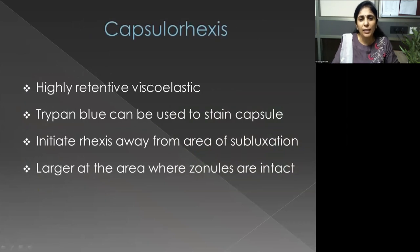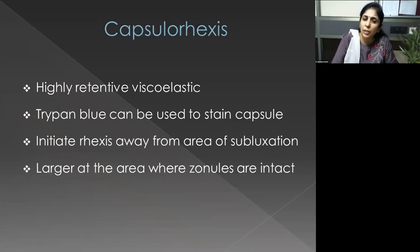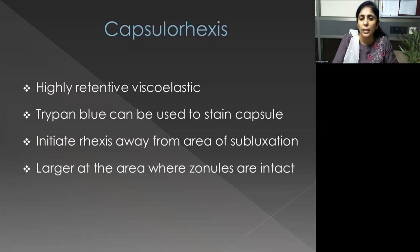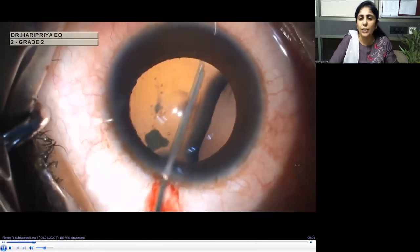The most important aspect is to do a good capsulorhexis, because if you want to use any devices like a CTR or hooks, a capsulorhexis is mandatory. A lot of effort is taken to ensure we use a good viscoelastic so you can make a complete, adequate-sized rhexis. If required, use a stain — this helps not just in the rhexis but also to insert your hooks and CTR.